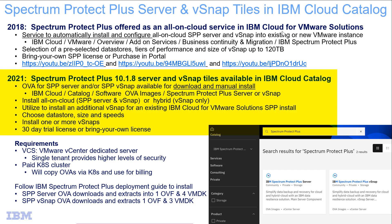The installation of the Spectrum Protect Plus Server OVA automatically installs a 30-day trial license. You could use this for proof of concept, and then you'll manually activate your own license — one you've probably purchased from Passport Advantage.